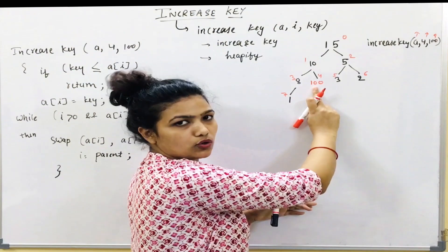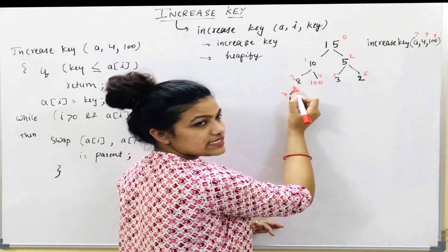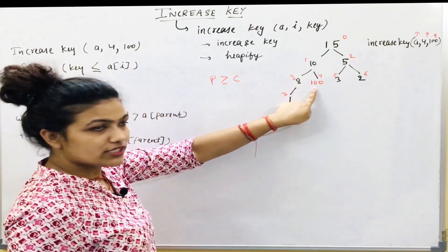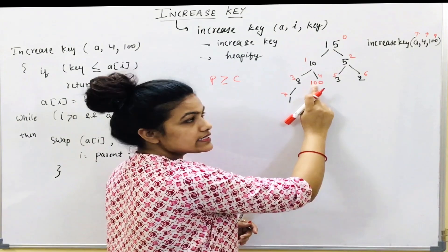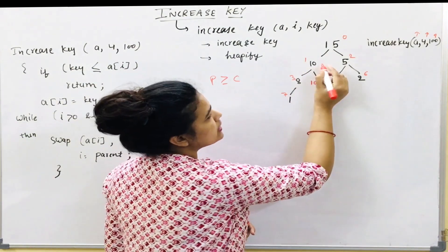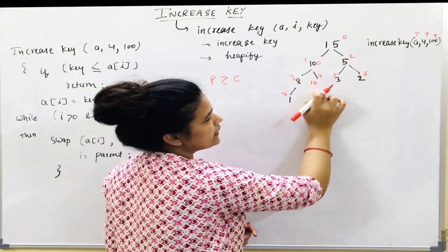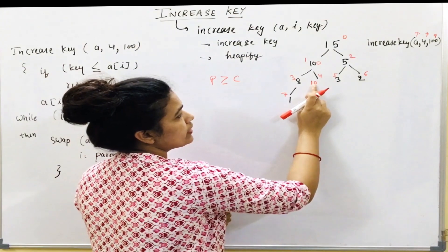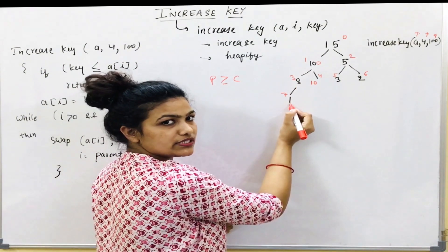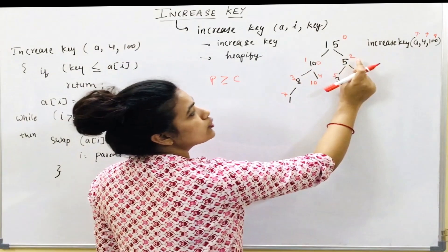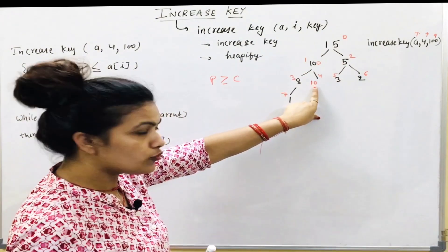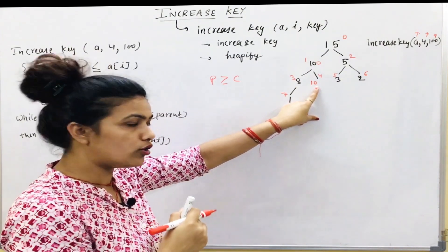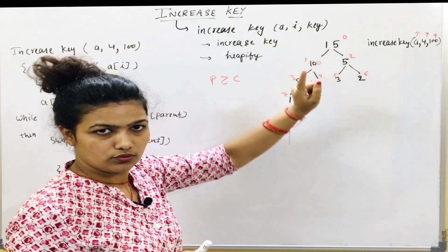We start from the node we just changed. At that node: 100 and 8 are children, parent is 10. The max-heap property is violated because a child is greater than the parent. So the maximum child (100) swaps with the parent. We then continue checking in decreasing index order: 4, 3, 2, 1, 0.